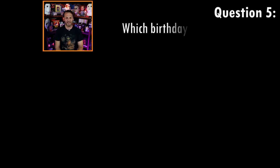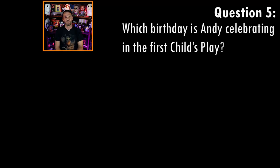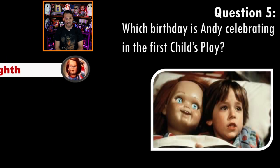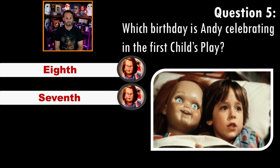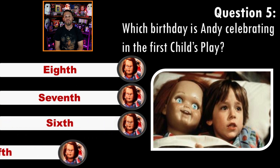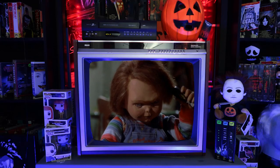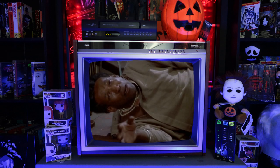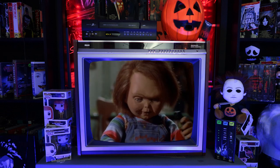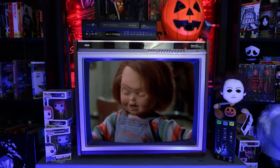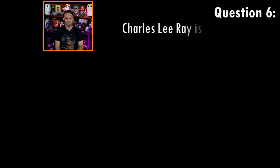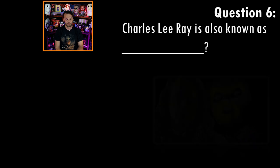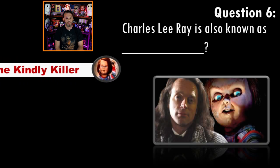Question five: which birthday is Andy celebrating in the first Child's Play? Six, eight, seven, or fifth? Answer: six. "The first person I let in on my little secret was a six-year-old kid. I'm gonna be six years old again. Well John, it's been fun, but I gotta go — I have a date with a six-year-old boy."